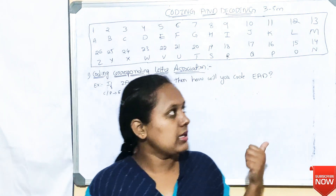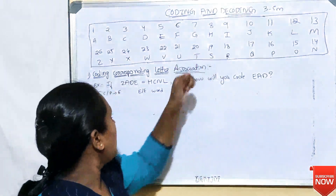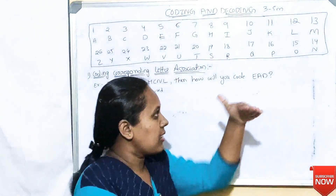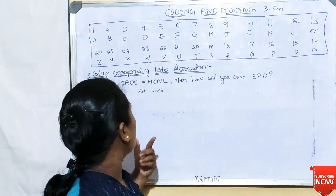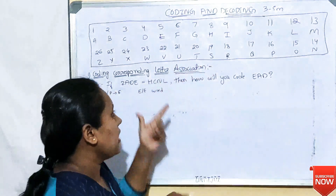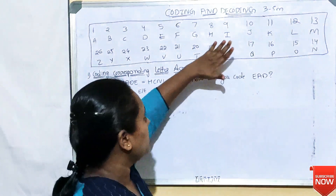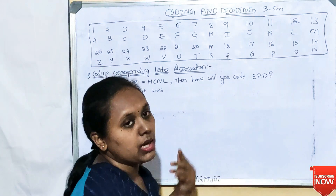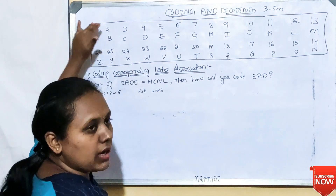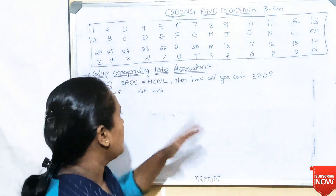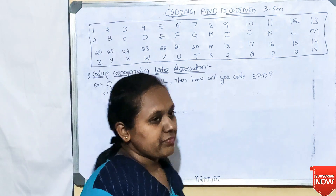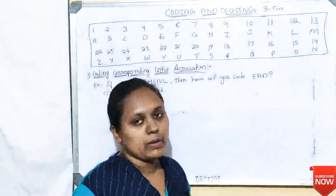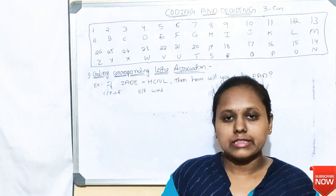Coding and decoding relies heavily on the English alphabet table. The same order of 13 letters and the reverse order positions are very important here. If you follow the pattern, there are only three types of questions.